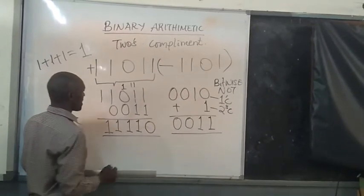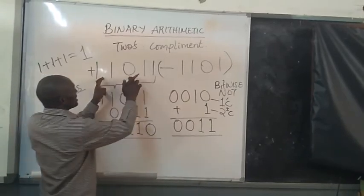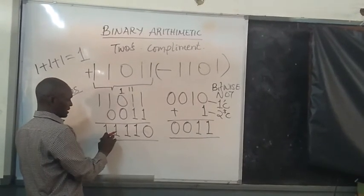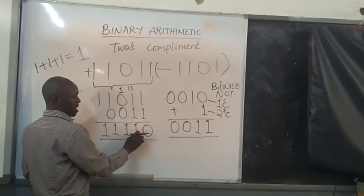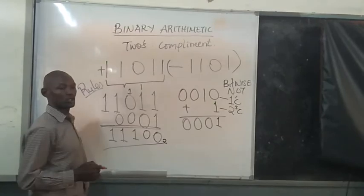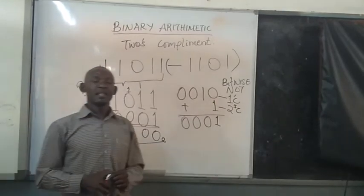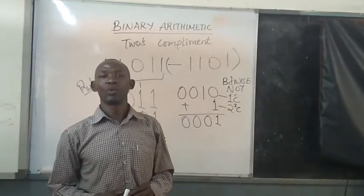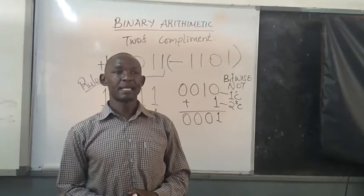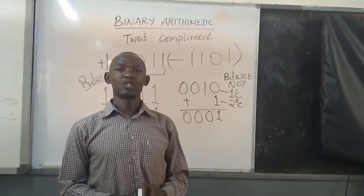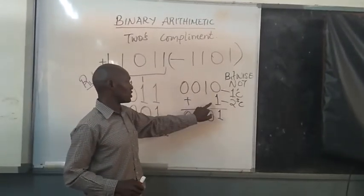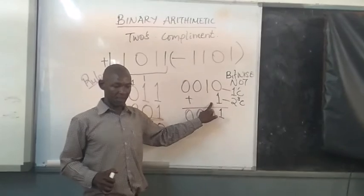So the resultant sum after subtracting this value from the other one, we are going to get one, one, one, one, zero, and this. That is what usually happens in the arithmetic and logic unit when it performs binary subtraction using both the one's complement, as you have seen here, and also the two's complement that you have seen here.